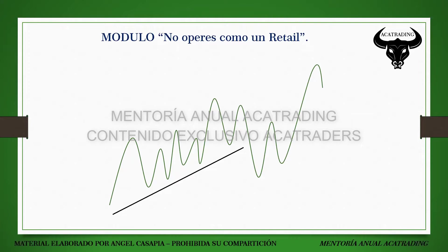Se pueden generar a partir de un fundamental, o a partir de que el precio en horario de Londres expanda de 25 a 50 pips, llegando a un order block. En ese caso podríamos ver al precio llegando a un better short block y creando ese vacío de liquidez. Mi mentoría es muy flexible en cuanto a operar lo que ustedes encuentran.